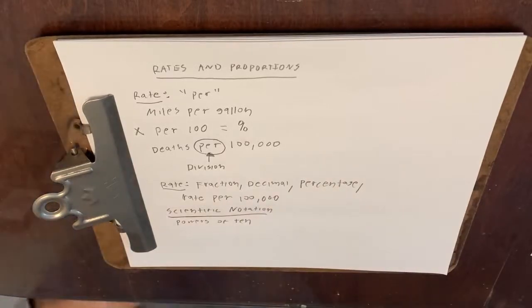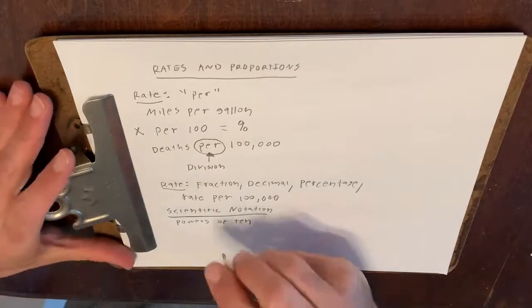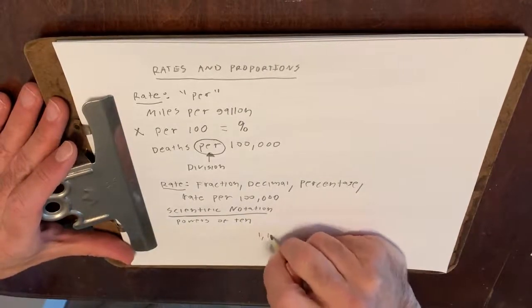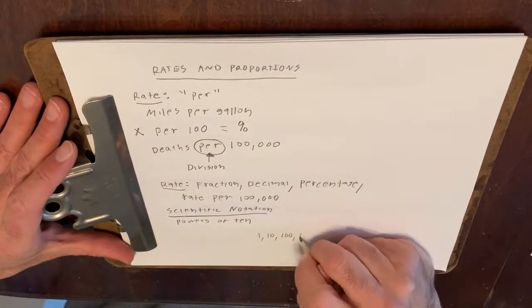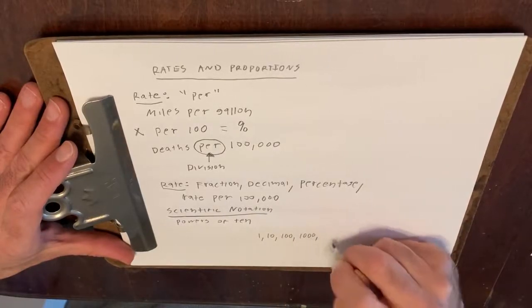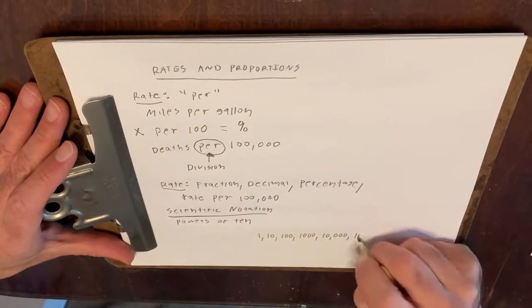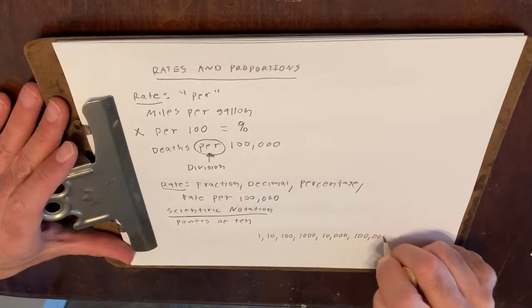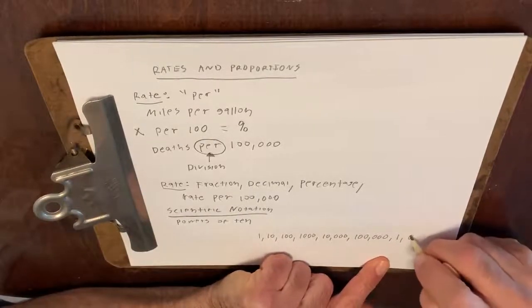These powers of 10 actually make up our decimal place value system, which we're used to. If we look at the ones place, the tens place, the hundreds place, the thousands place, the ten thousands place, the hundred thousands place, and finally — I'm only going to go up to the millions place.